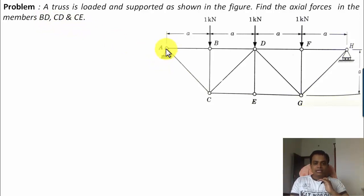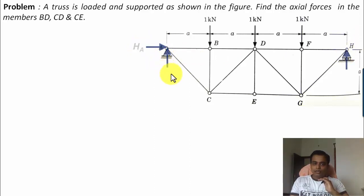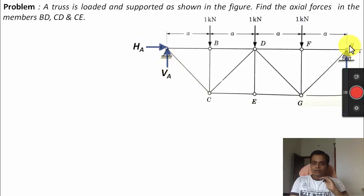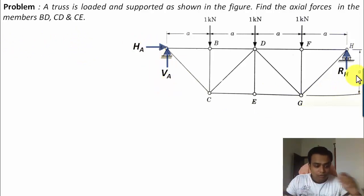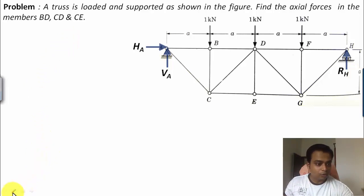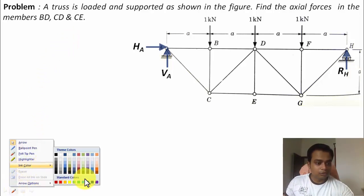Before calculating the actual forces in these three members, let us find the reactions at supports A and H. At A there is a hinged support, so two forces are present: HA and VA. At H we have a roller support, giving one single vertical reaction RH. To find these three unknowns we need three equations of equilibrium.